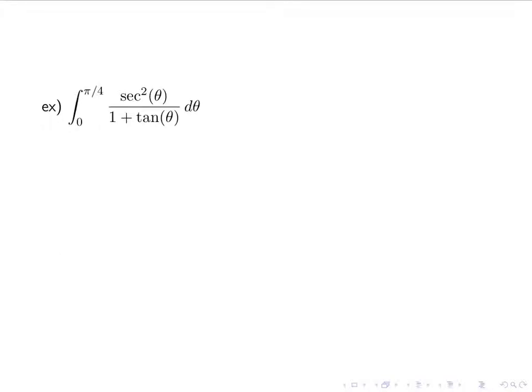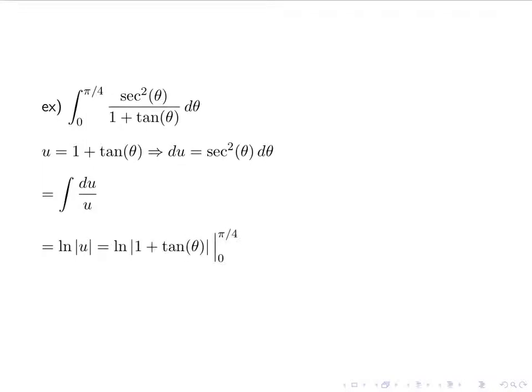For our last example, we look at a definite integral: the integral from 0 to pi over 4 of secant squared theta over (1 plus tangent theta) d theta. We let u equal the denominator, 1 plus tangent theta. The derivative is then secant squared theta d theta, which is our numerator. So we get the integral of du over u, which gives us ln of the absolute value of u, which is ln of the absolute value of (1 plus tangent theta), evaluated from 0 to pi over 4.